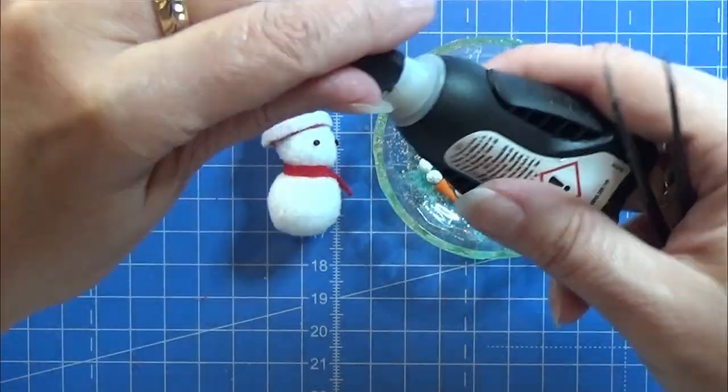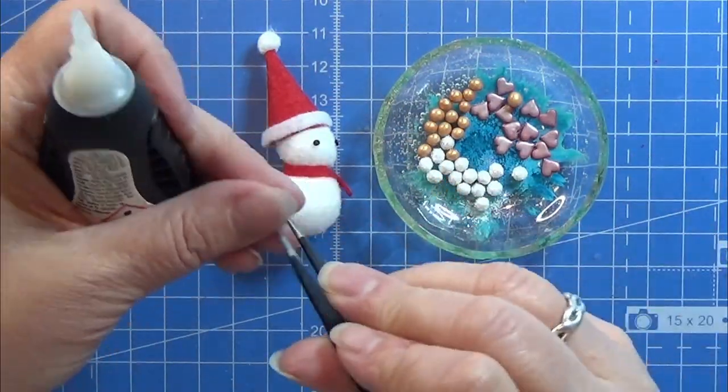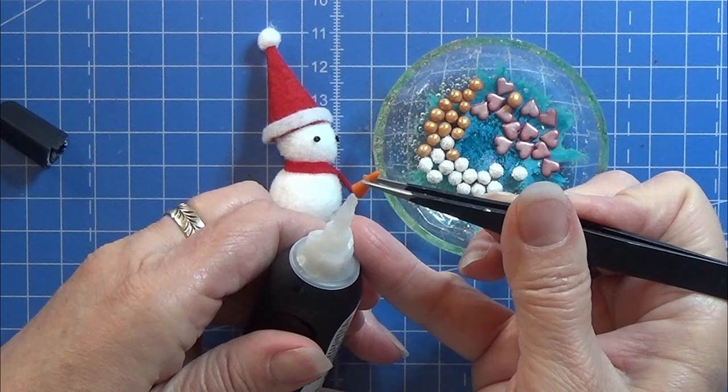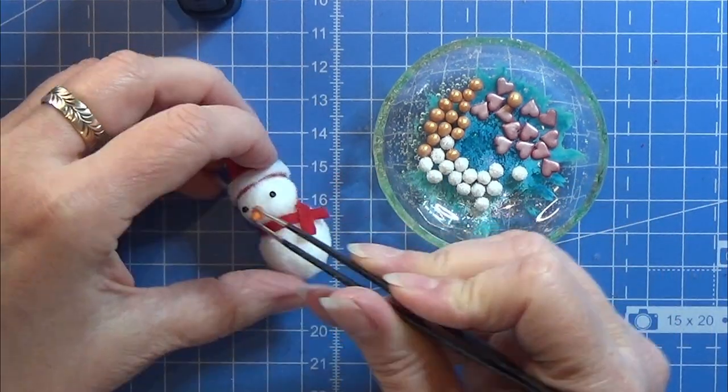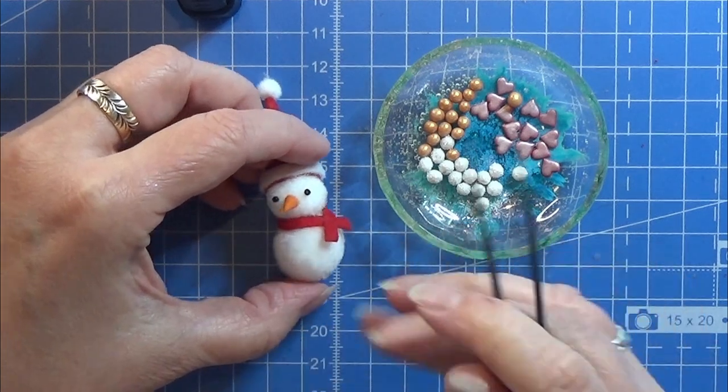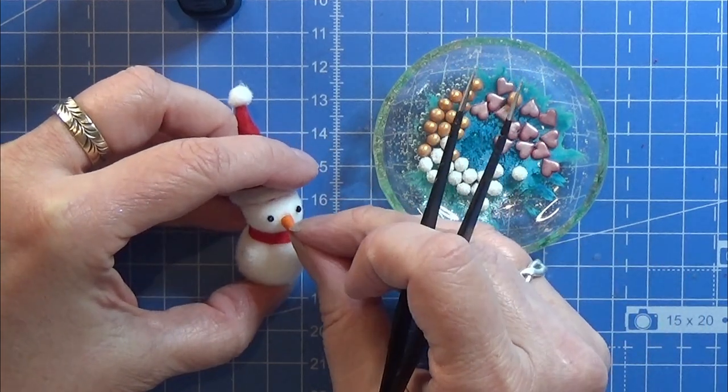Now I can glue on the nose on my little snowman here. I'm just using some super gel glue, so that's quick and easy, and just like that my little snowman has a nice nose.